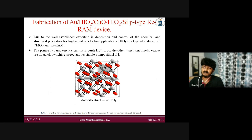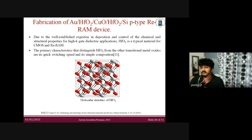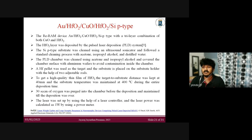This is another device — a trilayer device with copper oxide and hafnium oxide, maintaining the same bottom and top electrodes of silicon and gold. Hafnium oxide is widely studied in RERAM memory technologies and, as a transition metal oxide, it has a very fast switching speed. We combined hafnium oxide and copper oxide to create a new device. The hafnium oxide layer was deposited by pulsed laser deposition, following standard cleaning processes.